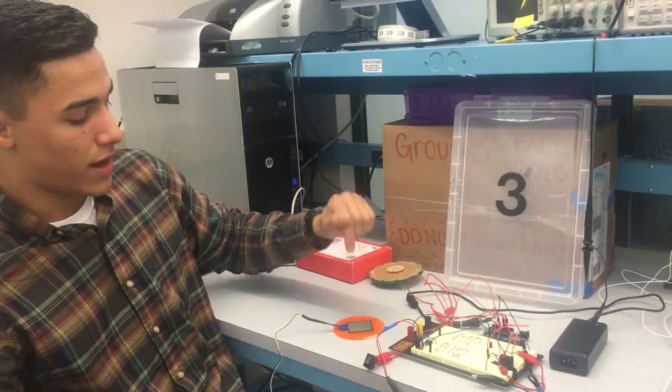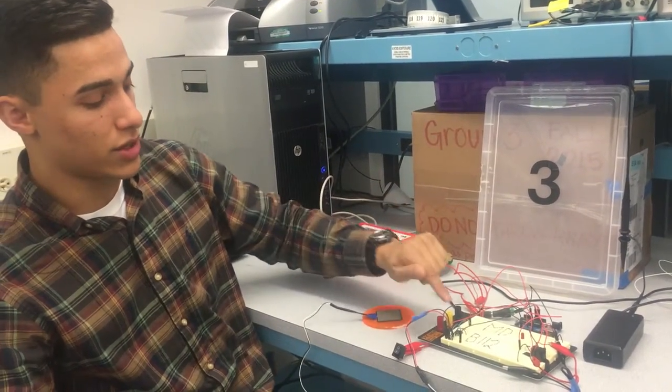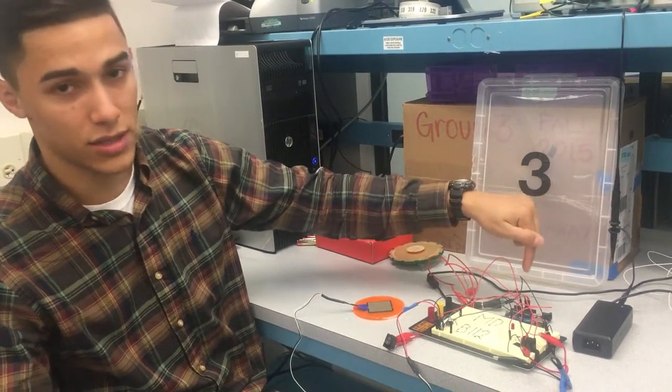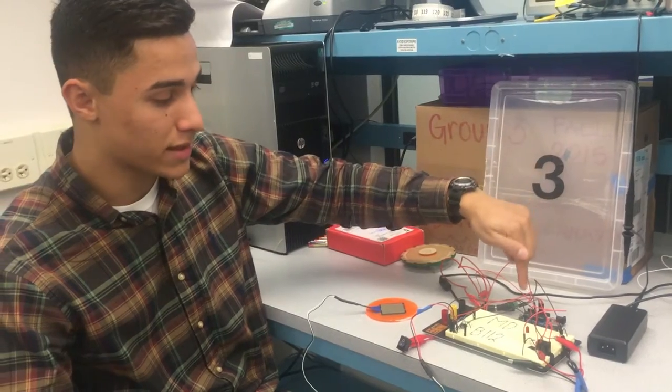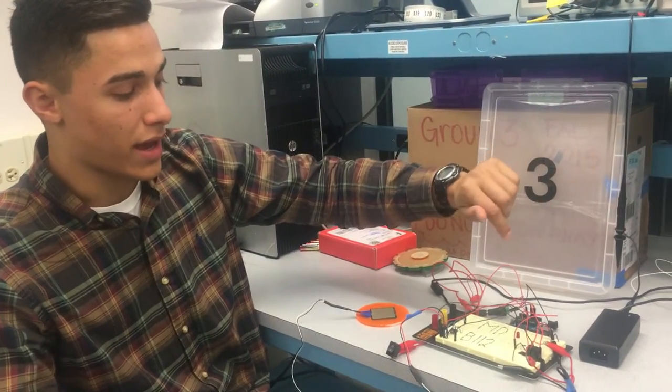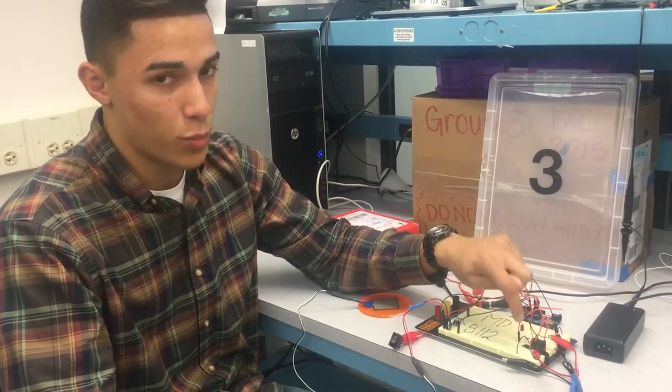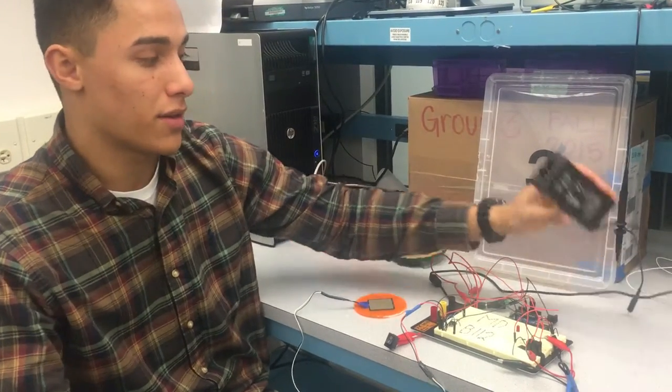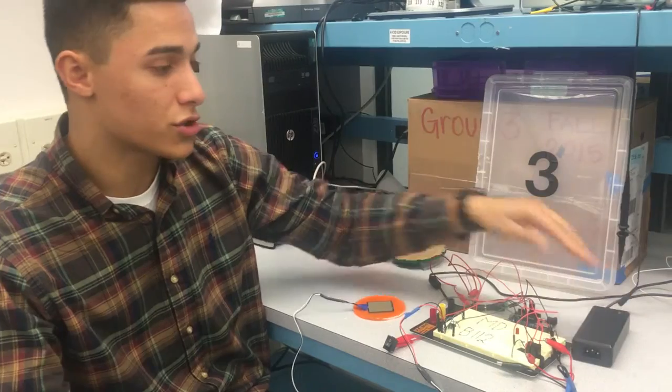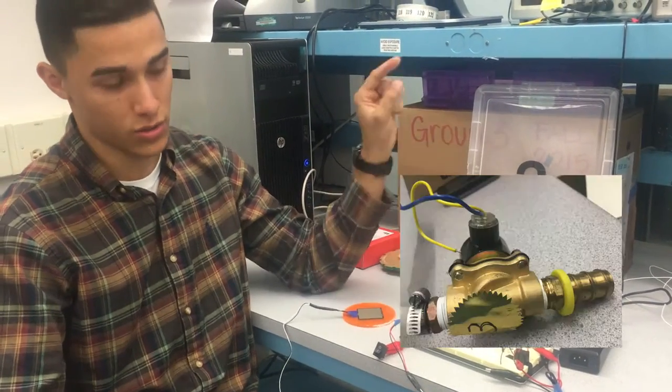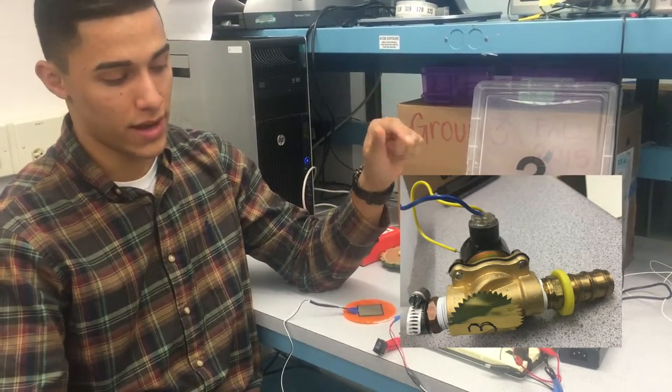The variable resistor had its differing voltage amplified by the amplifier and sent to the Arduino. The Arduino made sense of this information and, according to our code, either closed or opened the relay switch, which allowed the power supply to supply sufficient power to our solenoid to open or close that and fill our water bottle.